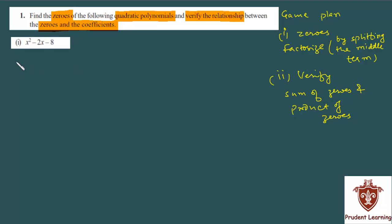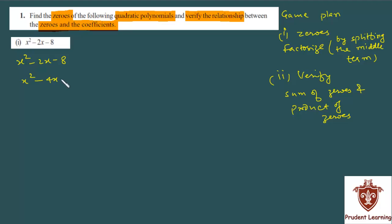Aapko jo polynomial given hai woh hai x² − 2x − 8. So first we will factorize this given polynomial by splitting the middle term. This can be rewritten as x² − 4x + 2x − 8.